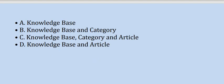Options are: Option A: Knowledge Base. Option B: Knowledge Base and Category. Option C: Knowledge Base, Category, and Article. Option D: Knowledge Base and Article.